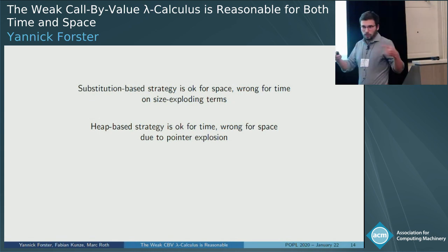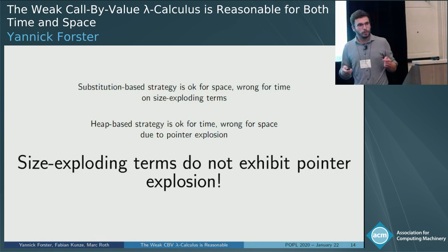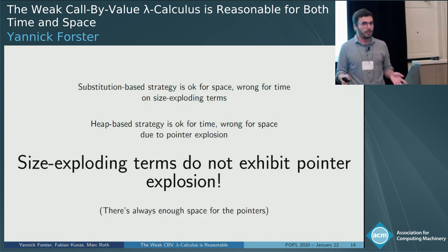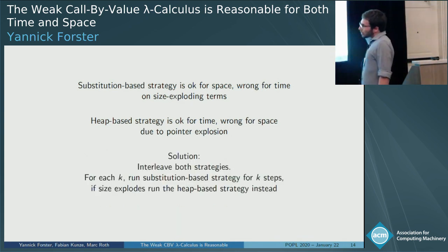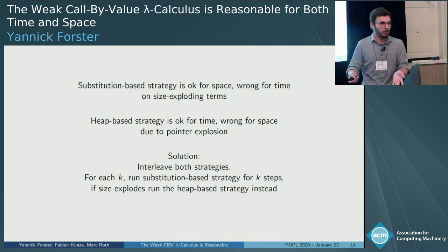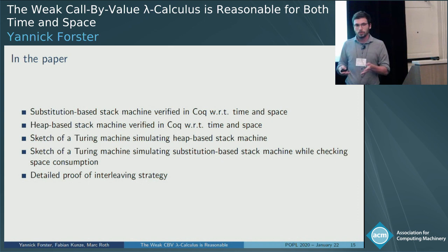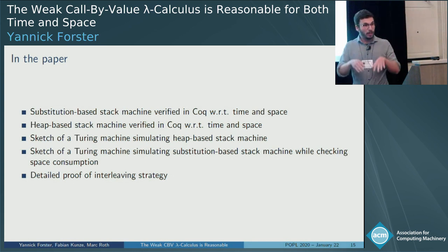The key insight is that size-exploding terms do not exhibit pointer explosion, because when terms are exponentially large there is enough space for pointers. The solution is to interleave both strategies: for each k, run the substitution-based strategy; if it explodes, switch to the heap-based strategy which now has enough space. In the paper, we have a verified substitution-based and heap-based stack machine in Coq, turn them into Turing machines, and give a detailed proof of the interleaving.